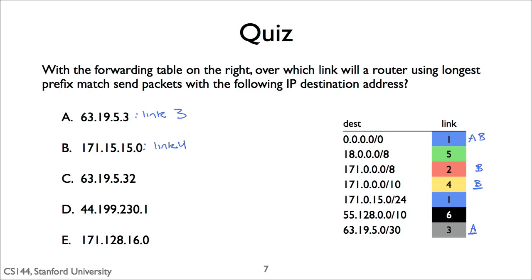The answer for C, 63.19.5.32, is link 1. The longest prefix matches the default route. It does not match 63.19.5.0 because it differs in the 26th bit. The answer for D, 44.199.230.1, is link 1. The longest prefix match is the default route.